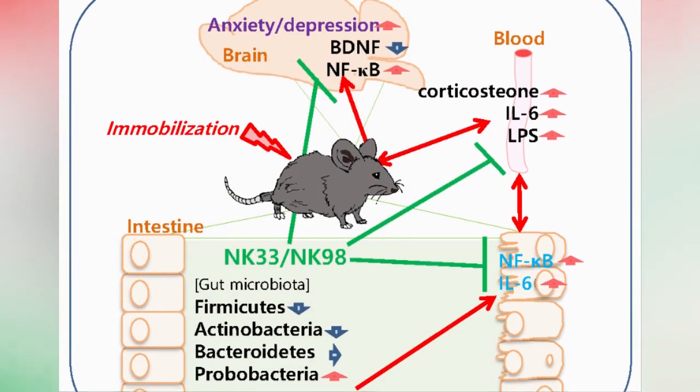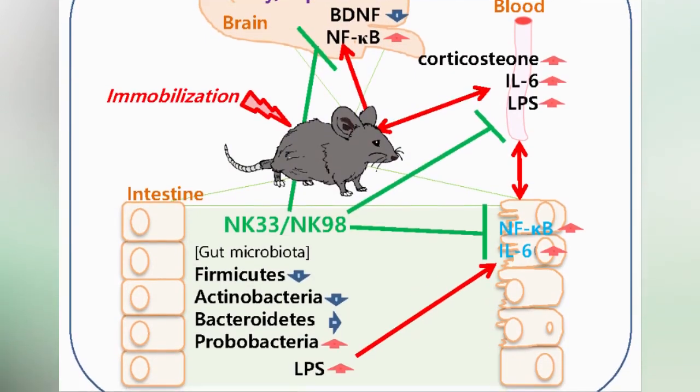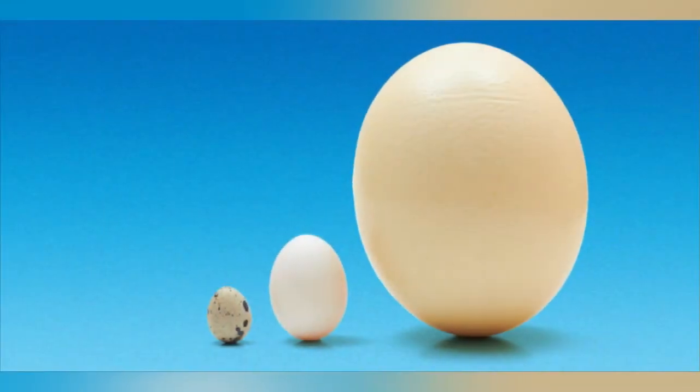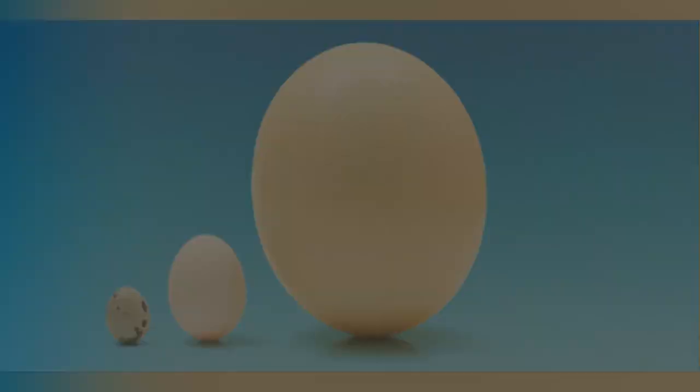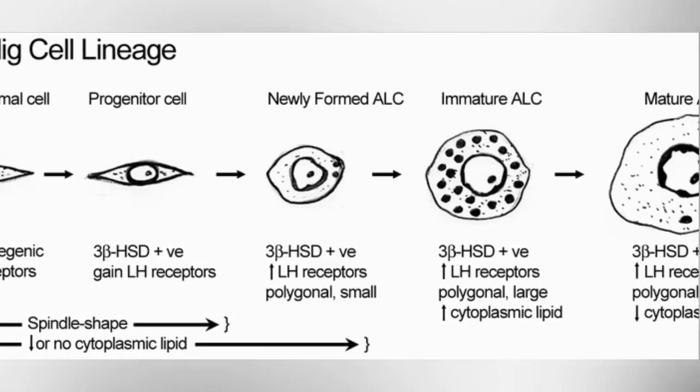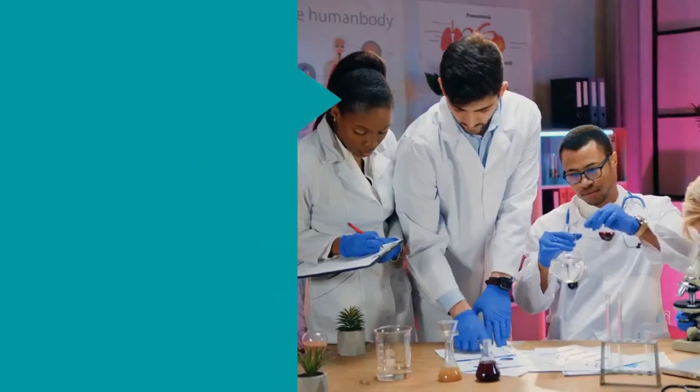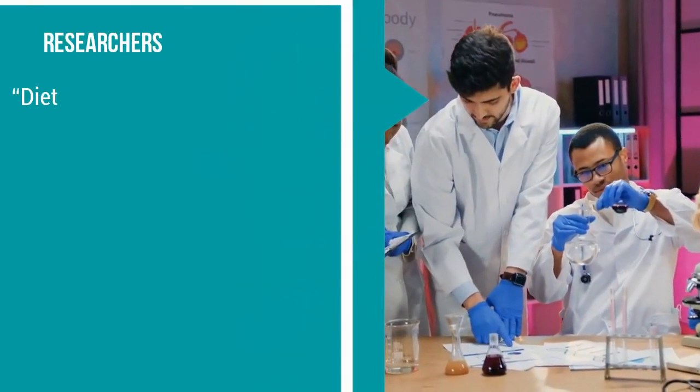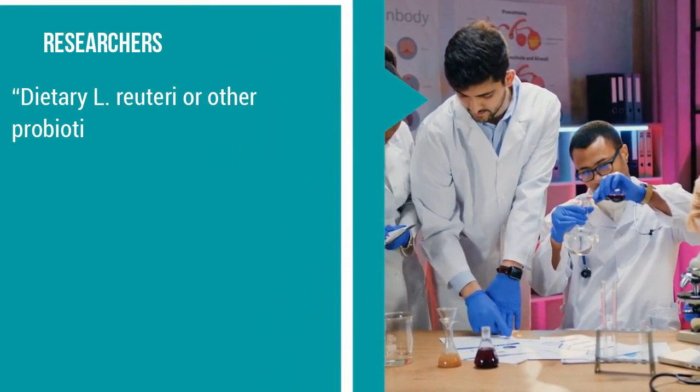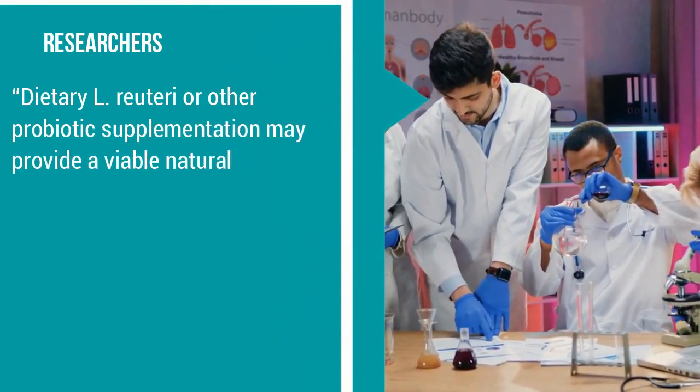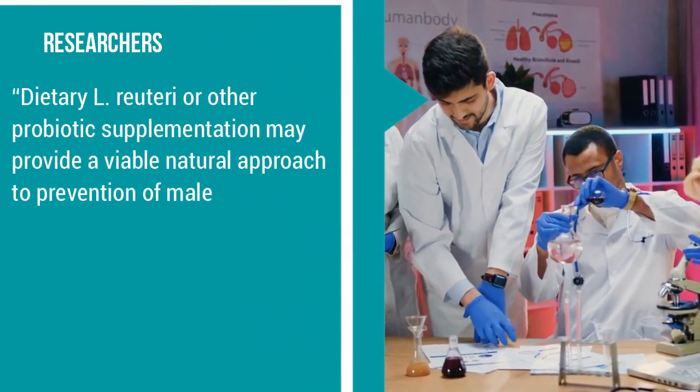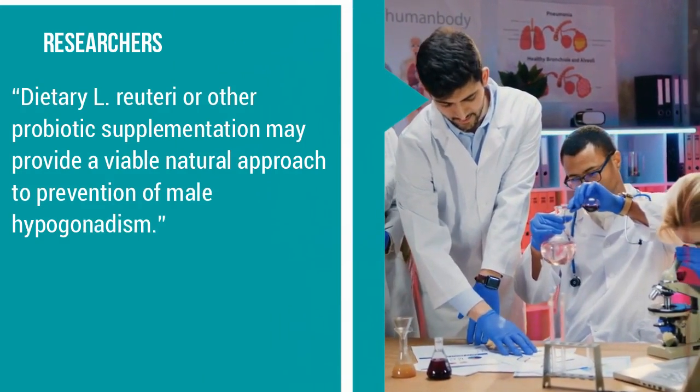The mice given L. reuteri showed increases in all measured markers. The bacteria increased testicle size, boosted sperm production, and raised the number of Leydig cells in the subjects. This led the researchers to conclude that dietary L. reuteri and other probiotic supplements may provide a viable natural approach to prevention of male hypogonadism.